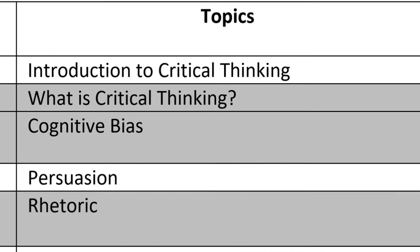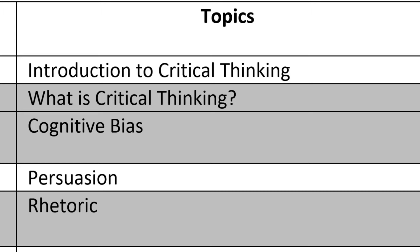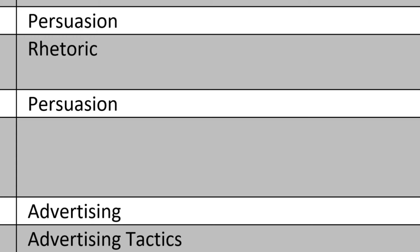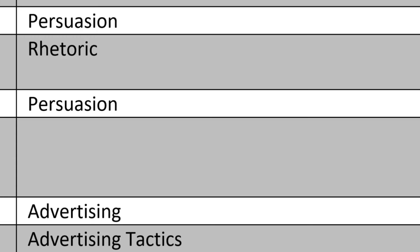Let's dive in and look at the semester schedule. I've zoomed in on the middle column showing the topics. We start with an introduction — what is it that we're studying. Then we cover cognitive bias, persuasion and rhetoric, and move into advertising, because that's an area where persuasion is really useful. I want to look at different tactics used in advertising, whether in media or in the way stores set up their layout.